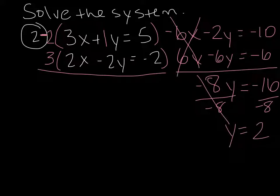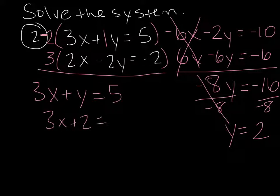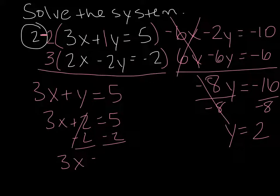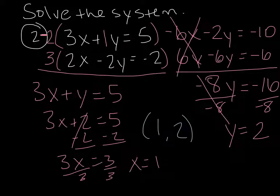So now that I have my y, I just rewrite my first equation. 3x plus y equals 5. Plug in 2 for y, so 3x plus 2 equals 5. Subtract 2, 3x equals 3, divide by 3. So my final answer is 1, 2. Don't forget you can always pause this so you can get everything written down.